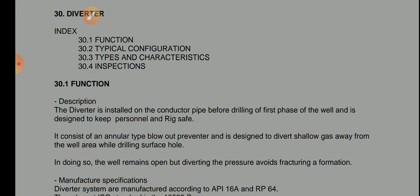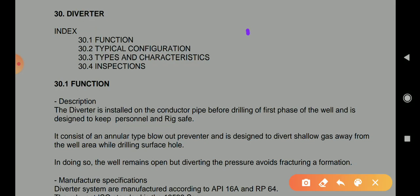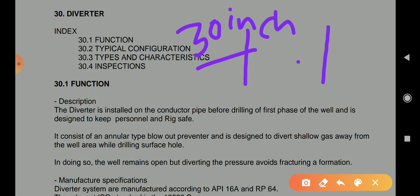The diverter is installed on the conductor pipe. The conductor pipe is mostly provided at a size of 30 inches - a very big one - which is used to avoid problems such as collapsing of the well. It is the first pipe, the conductor pipe, and the diverter is installed on it before drilling the first phase of the well.